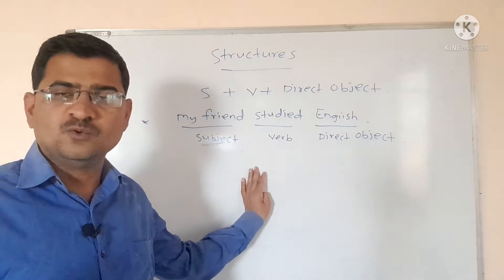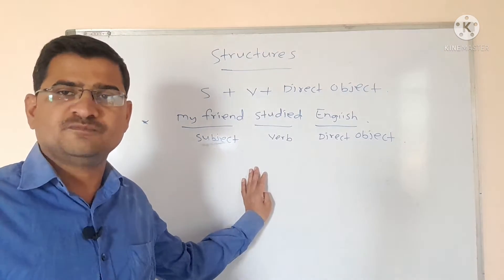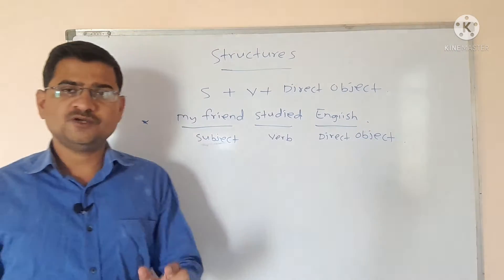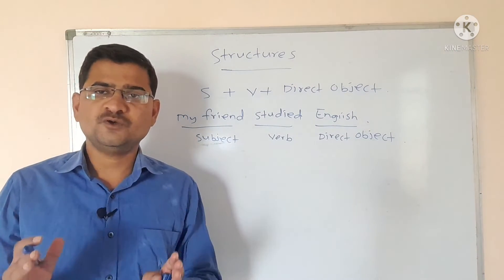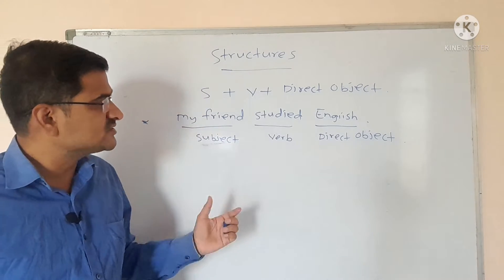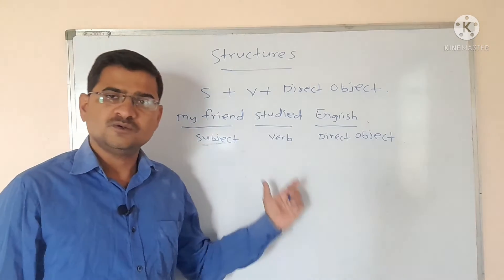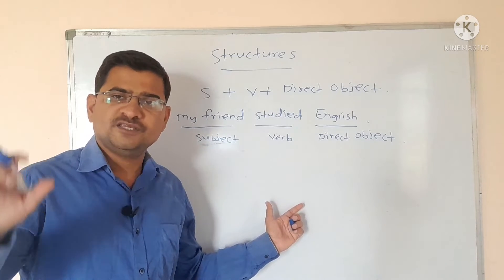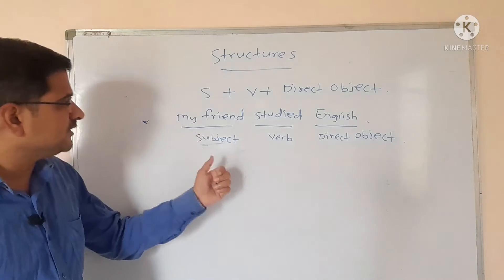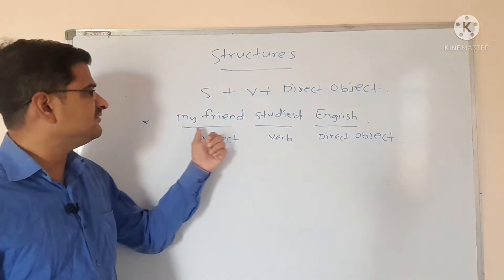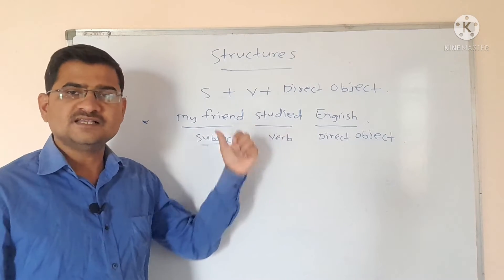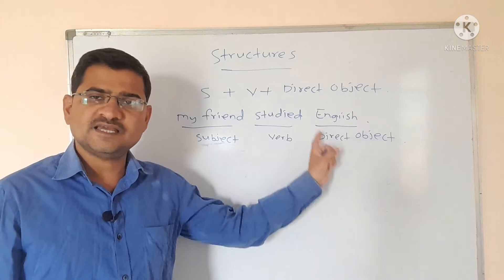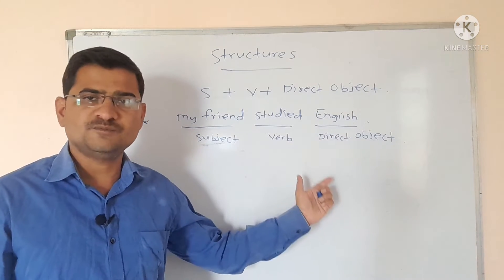Try to understand how to find out a direct object from a given sentence. There is one trick you have to keep in your mind: you have to ask the question with 'what' or 'whom' in order to get the direct object from the statement. What did my friend study? The answer is English. Therefore, in this sentence, English is an example of a direct object.